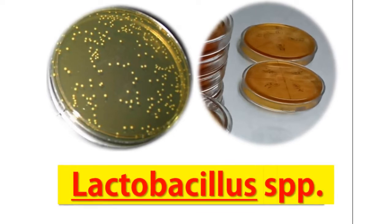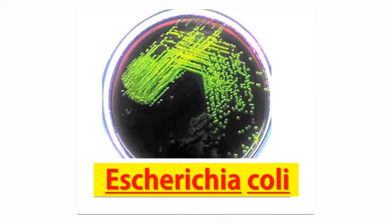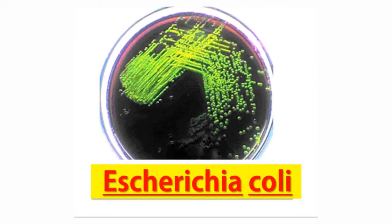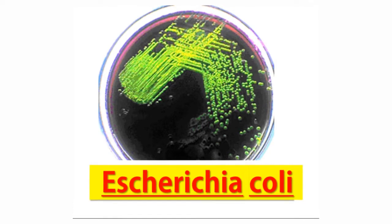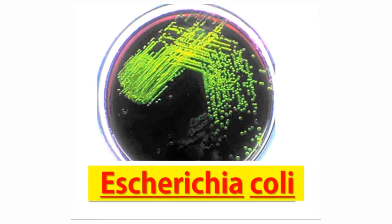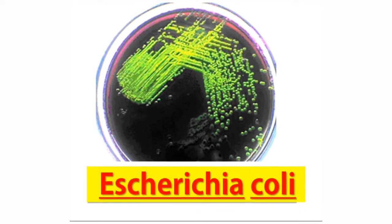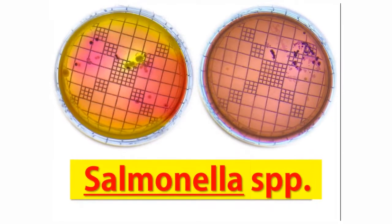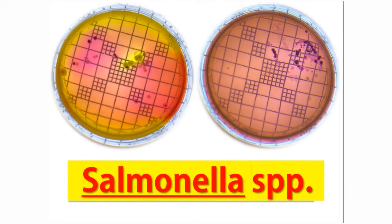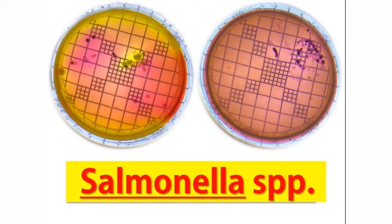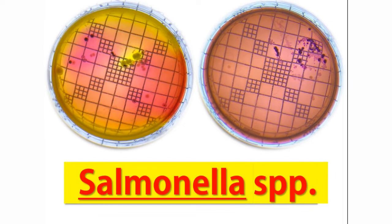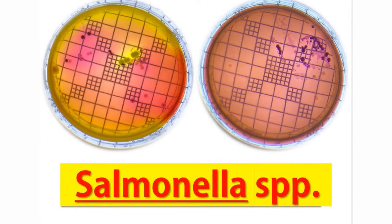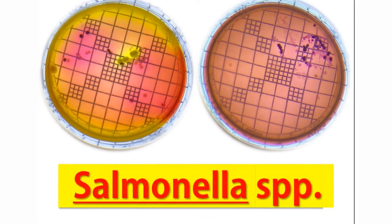E. coli: After incubation, E. coli appeared as greenish metallic sheen. Using a sterile inoculating loop, one colony was taken from the petri plate and stirred in a test tube having 10 ml nutrient broth and kept in the incubator at 37 degrees Celsius for 24 hours. Salmonella species: After incubation, using a sterile inoculating loop, one colony was taken from the petri plate and stirred in a test tube having 10 ml nutrient broth and kept in the incubator at 37 degrees Celsius for 24 hours.